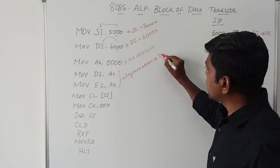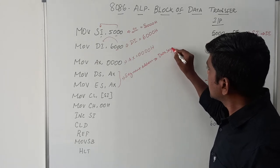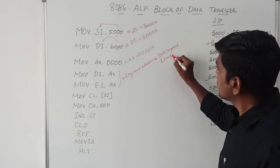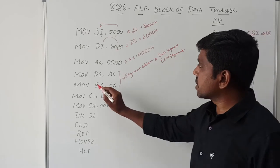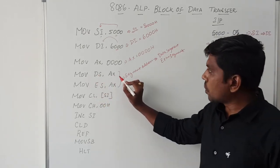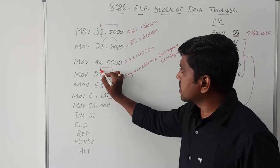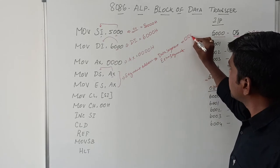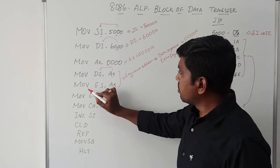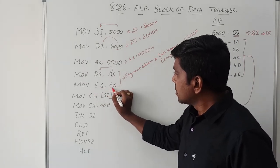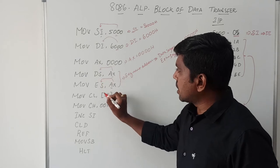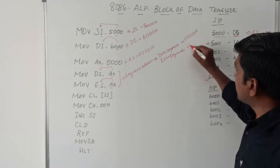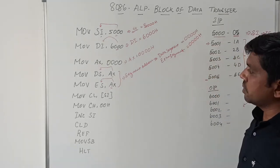DS represents the data segment and ES represents the extra segment. The instruction MOV DS, AX transfers the content of AX to DS, so after execution the data segment value becomes 0000H. Then MOV ES, AX — whatever value is present in AX, that content is transferred to ES. After execution, the extra segment value also becomes 0000H.